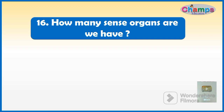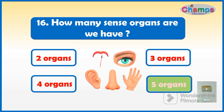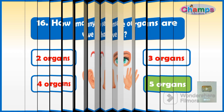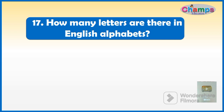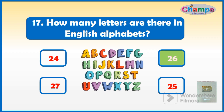How many letters are there in the English alphabet? Options: 24, 26, 27, or 25. And your time starts now. The correct option is 26.